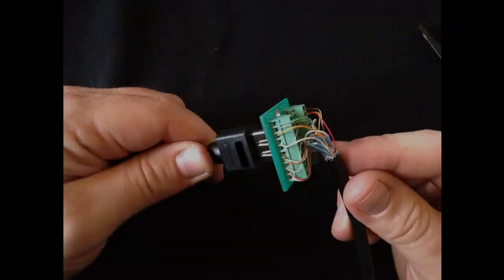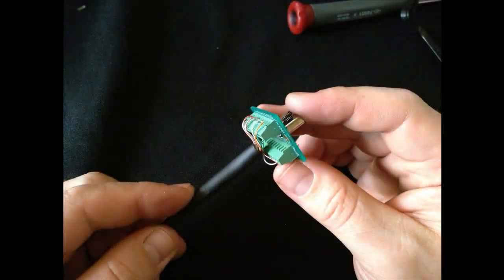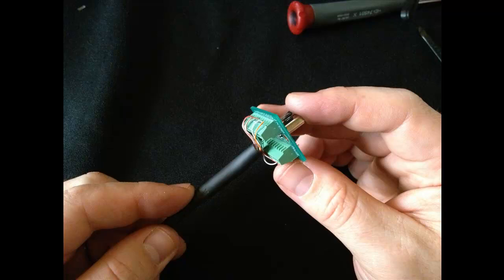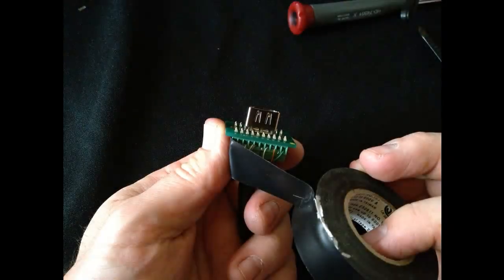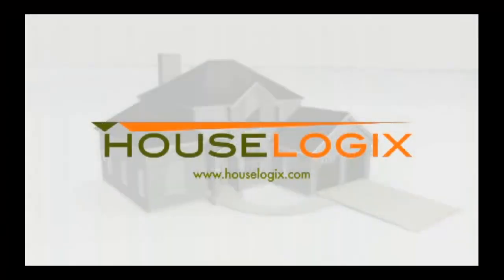Once all wires are terminated, connect and test the HDMI cable. After verifying that the cable terminations are good, move the shrink wrap up and heat the shrink wrap into position. Finally, put some electrical tape over top of the wire terminations just to protect them. For other products and support, please visit HouseLogix.com.